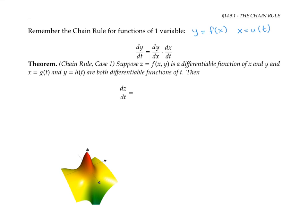then we can write dz/dt as partial z with respect to x times dx/dt plus partial z with respect to y times dy/dt.